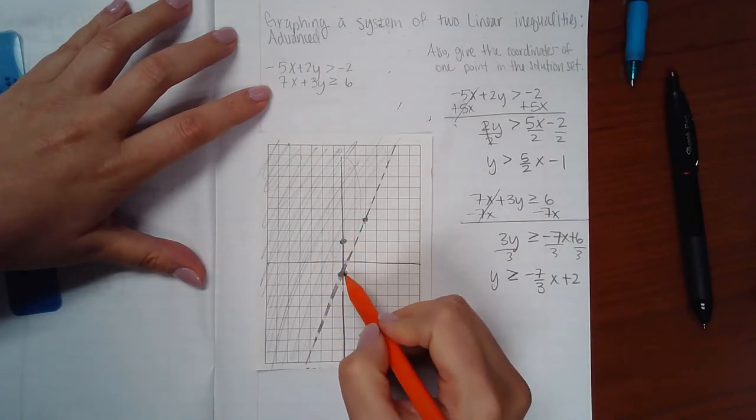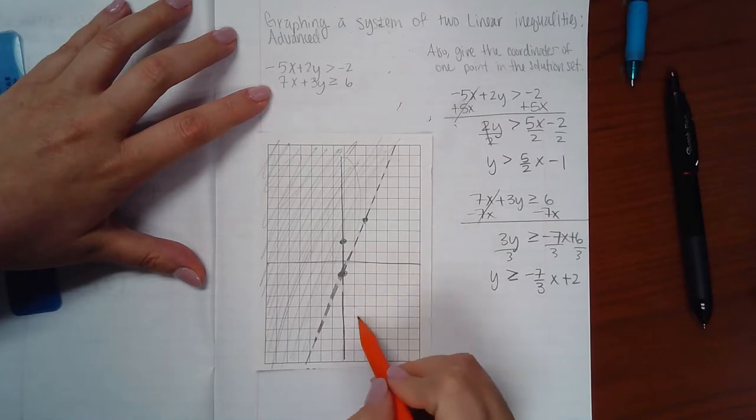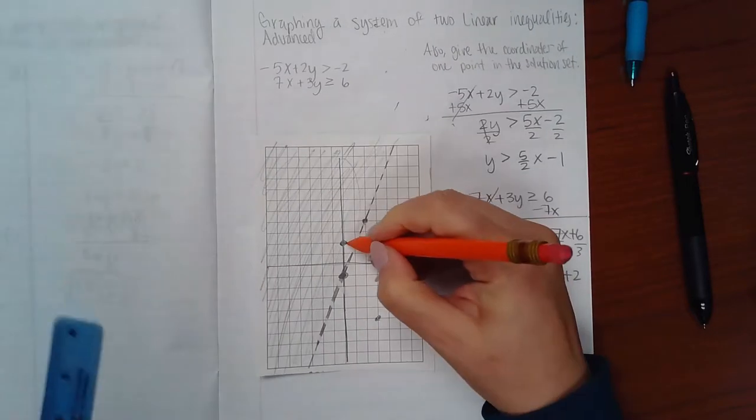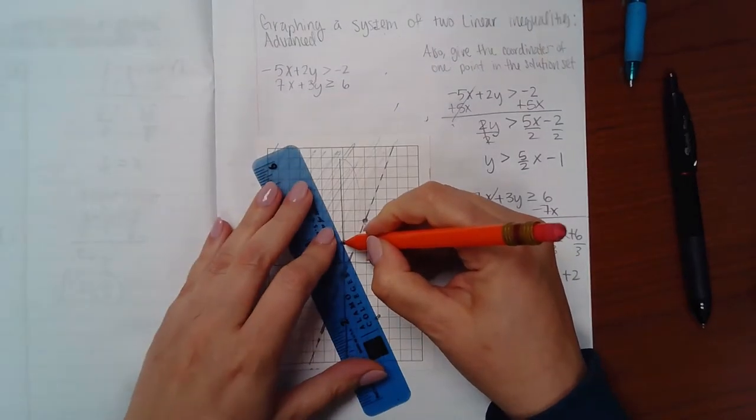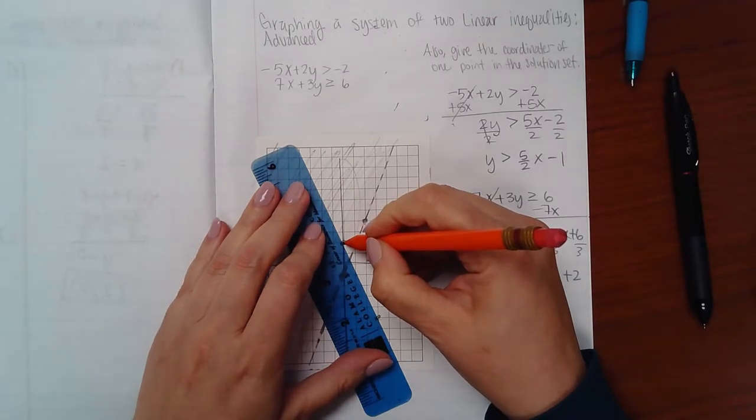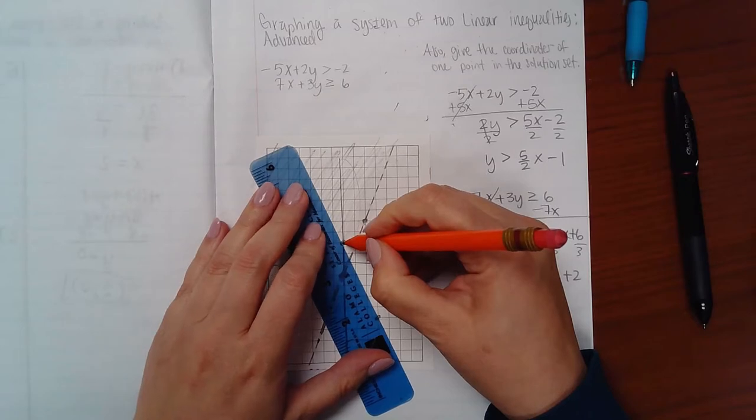This time I have a y-intercept of positive two, and I'm going to go down 7 and over 3, and then we get this as our line.